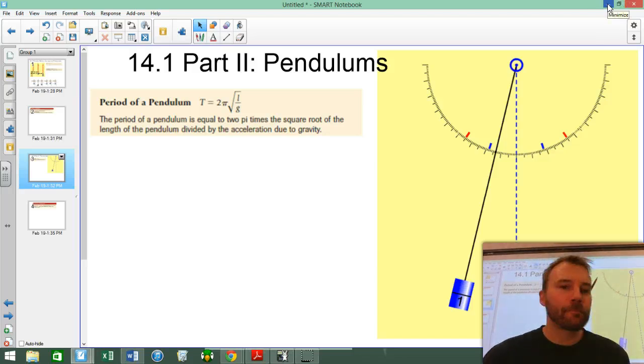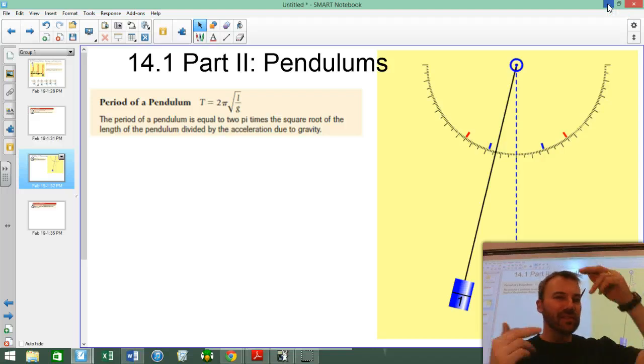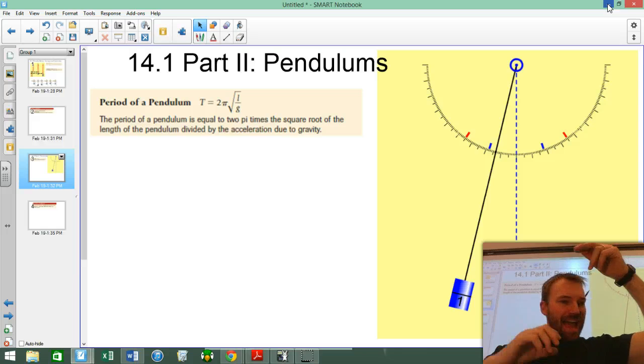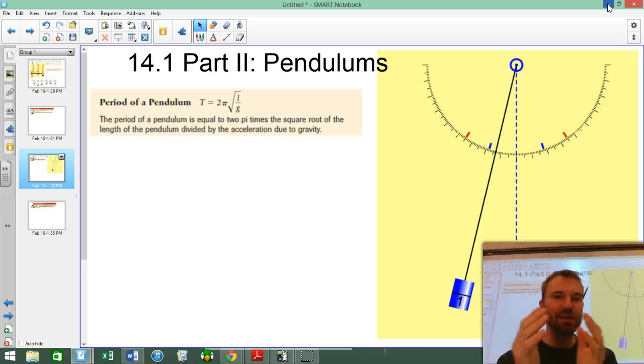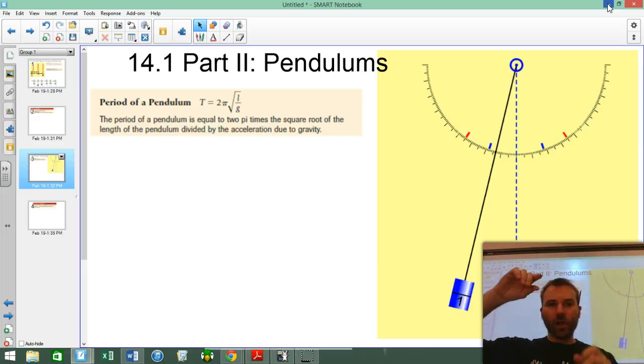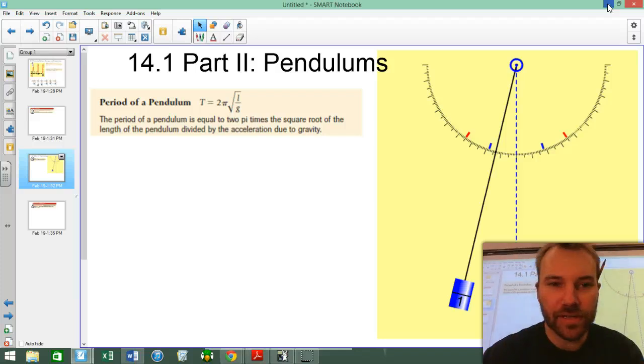Thing number one, a pendulum, when it swings, the only thing it depends on is the length. A heavier mass on the bottom will do nothing to make it swing any faster. Longer will swing slower, shorter will swing faster, but the length does everything.